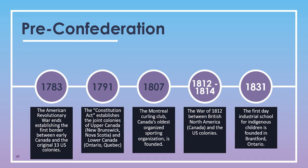In 1807, the Montreal Curling Club, Canada's oldest organized sporting organization, was founded. Between 1812 and 1814, the War of 1812 occurred between British North America and the United States. In 1831, the first industrial school for indigenous children was founded in Brantford, Ontario, beginning what would become the residential school era in Canada.